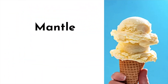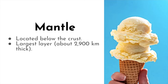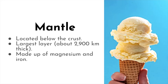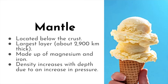The next layer is the mantle, and we represent the mantle with ice cream. It's located below the Earth's crust and above the outer core. It is the largest layer, about 2,900 kilometers thick. It's made up of mostly magnesium and iron, and its density increases with depth due to an increase in pressure from all the material on top of it.